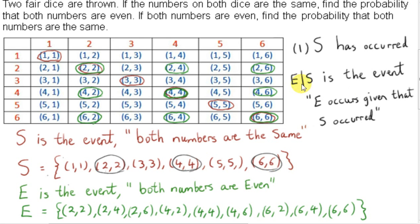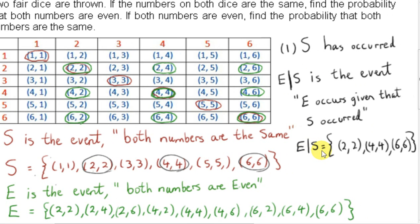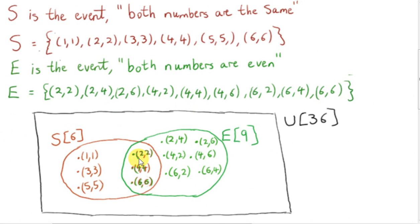Now let's look at some notation for conditional probability. The symbol E vertical line S means 'E given S' — this is the event that E occurs given that S has already occurred. We could write the event E given S as the set consisting of these three elements. Note that the event E given S is the same as the intersection of the sets E and S.